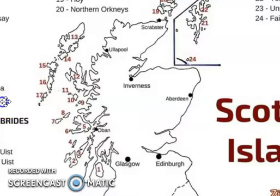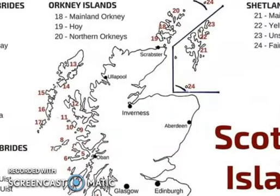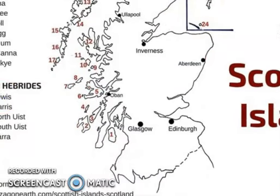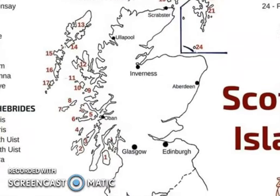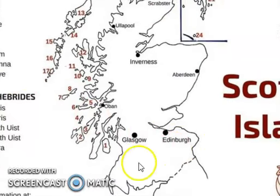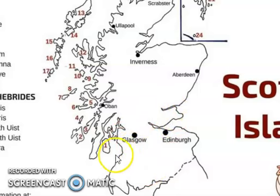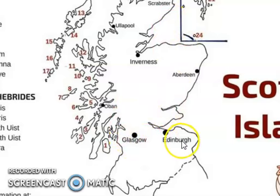Scotland has a number of islands and the mainland, and the mainland is composed of the flatlands where most of the cities are, in the south and in the east. So the main cities are Glasgow, Edinburgh and Aberdeen.